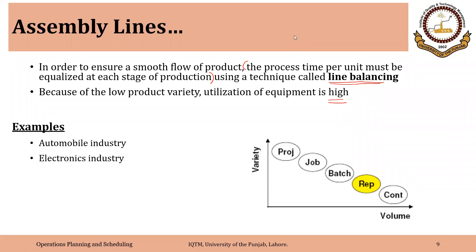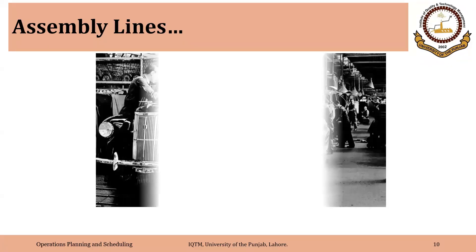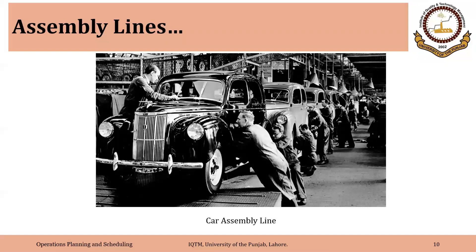Many products during the final stage of manufacturing require the assembly process. Examples include automobile manufacturing and the electronics industry. Car assembly line is a prime example — assembly is actually the last process in manufacturing of a car.